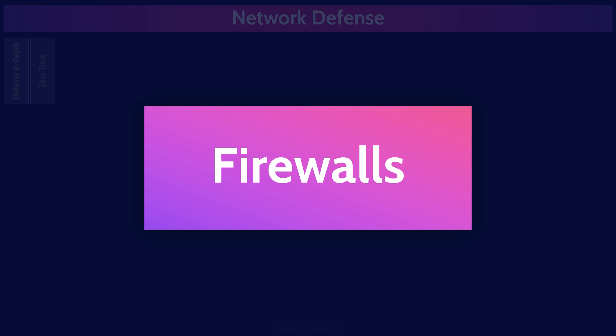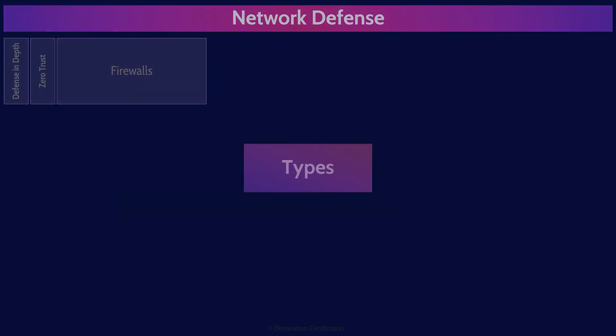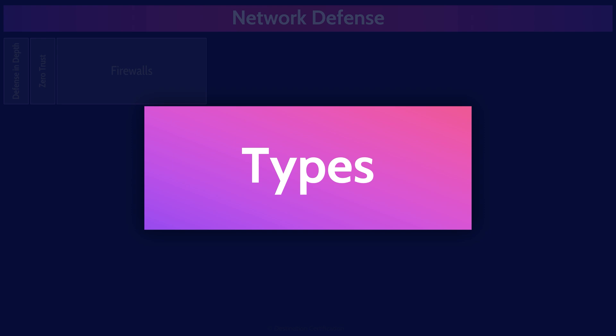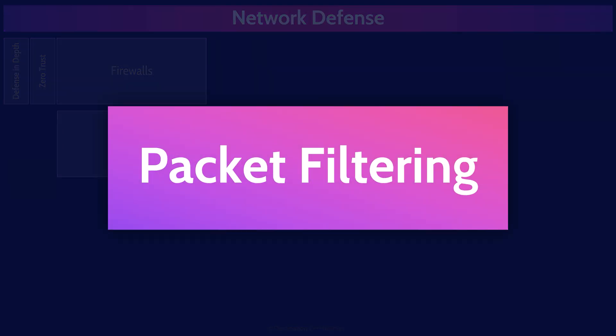Zero trust plays a big part in how we should go about designing our networks these days. Now, onto one of the most fundamental tools in network security: firewalls. At the most basic level, the job of a firewall is to control the flow of traffic between two or a few network segments — for instance, controlling what traffic is allowed to come in and out of the sketchy internet into the internal network of the organization. We'll start with the oldest, simplest types of firewalls: packet filtering firewalls. Packet filtering firewalls only inspect packet headers, looking at the source and destination IP addresses and ports against a set of rules typically defined in an access control list.